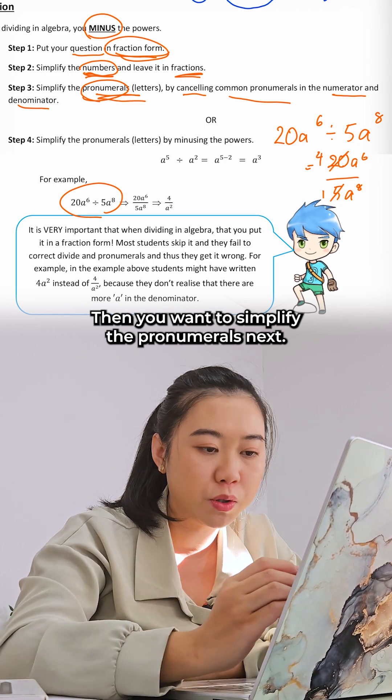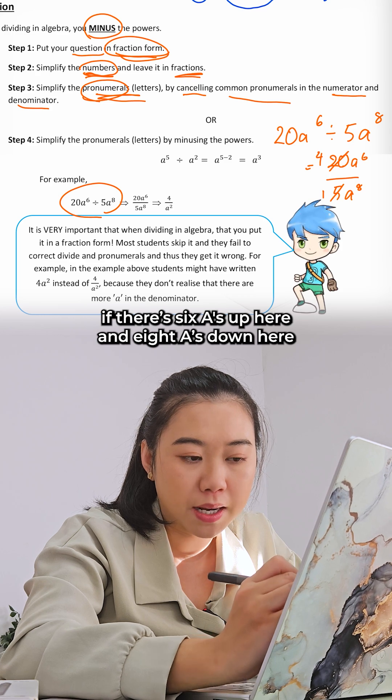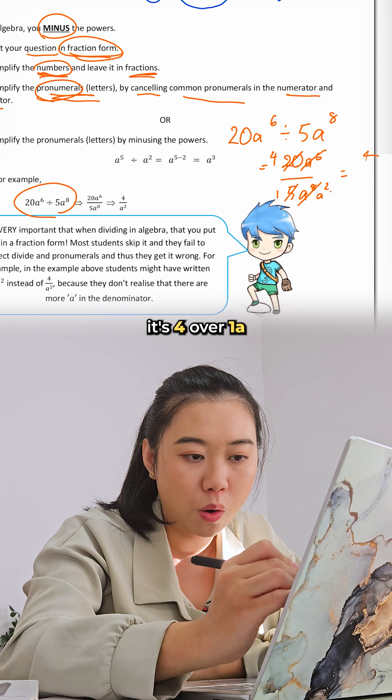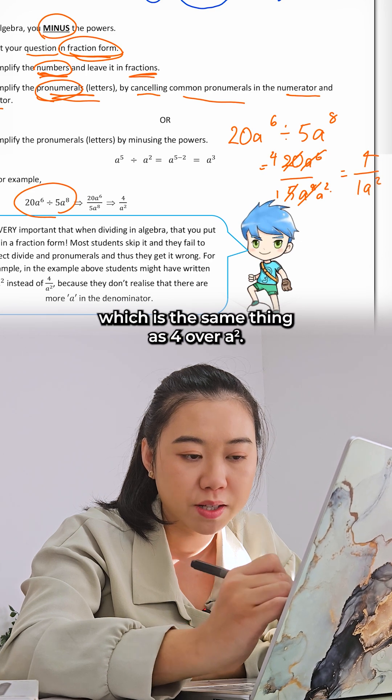Then you want to simplify the pronumerals next. If there's six a's up here and 8a's down here, there would only be two left at the bottom. What's left over is 4 over a², and that's how you get that answer.